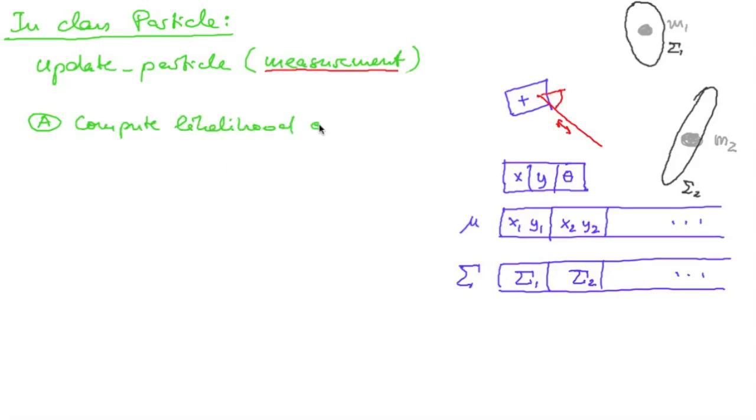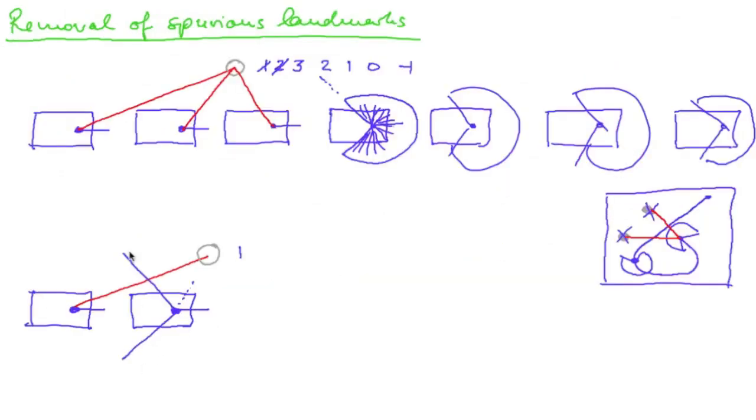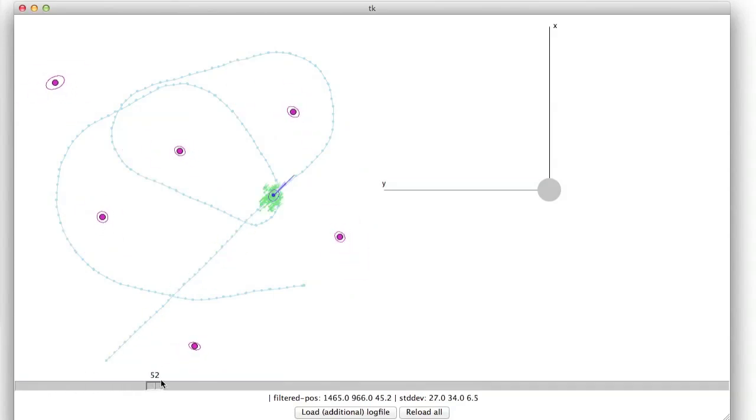In the measurement update we will either initialize a new or update an existing landmark and we will also add code to remove spurious landmarks which are not consistently observed. This will finally lead to an implementation of the particle filter SLAM algorithm.